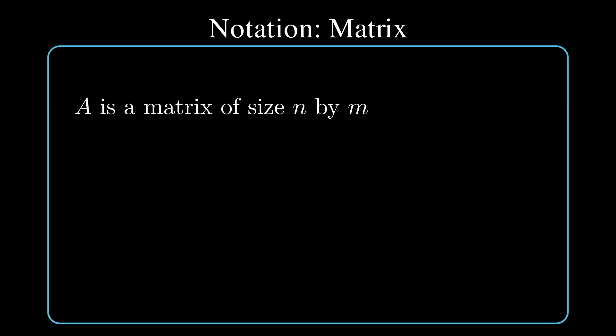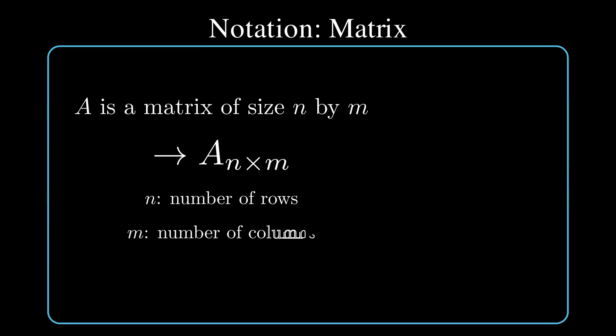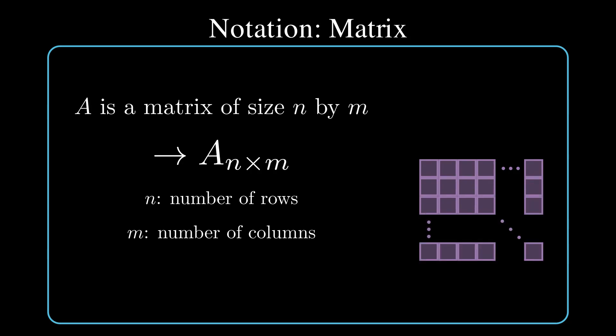First let's define our notation. We say that A is a matrix of size n by m and we can represent the dimensions of A with a subscript as shown here, where the first subscript n is the number of rows and the second subscript m is the number of columns. We can also represent matrix A as a grid with n rows and m columns.